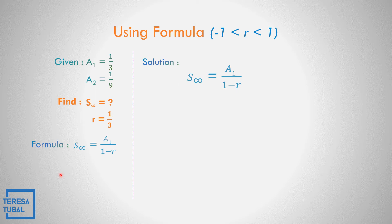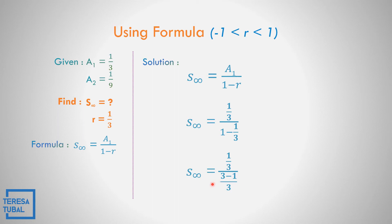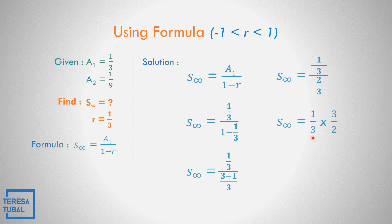The formula for the sum to infinity is a sub 1 all over 1 minus r. Let us replace all values: the first term is 1 third, all over 1 minus the common ratio 1 third. Copy the numerator and solve for the denominator. The LCD is equal to 3. So 3 divided by 1 is 3 times 1 equals 3; and 3 divided by 3 is 1 times negative 1, equals negative 1. Then 3 minus 1 equals 2 all over 3. Get the reciprocal of the denominator: 1 third divided by 2 over 3. Cancel 3, so the answer is equal to 1 half. The sum of infinity is equal to 1 half.